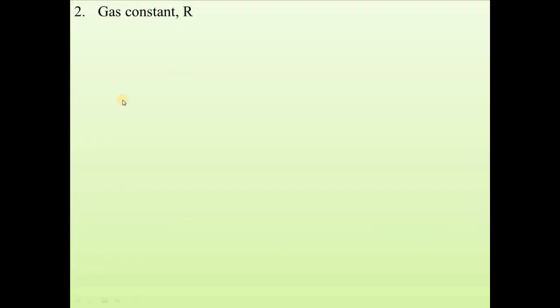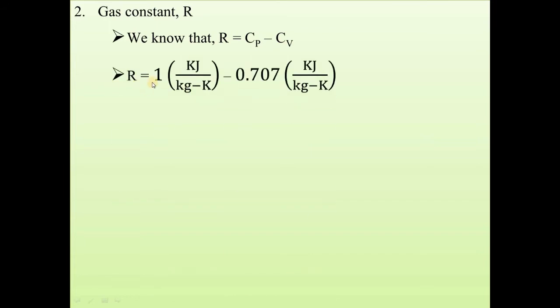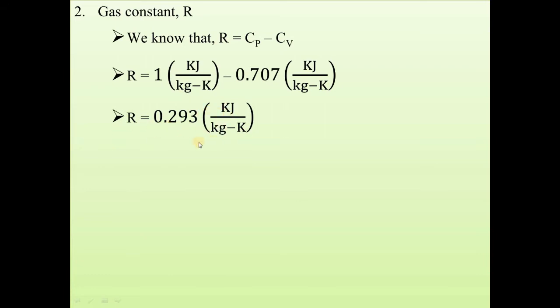Now we find the gas constant R using the formula R = Cp − Cv. Substituting: R = 1 kJ/kg·K − 0.707 kJ/kg·K = 0.293 kJ/kg·K. So the gas constant for this adiabatic compression process is 0.293 kJ/kg·K.